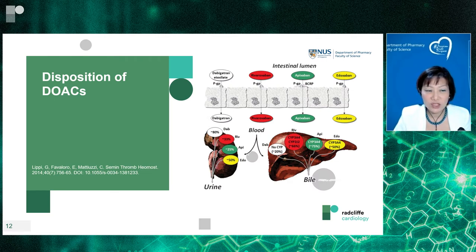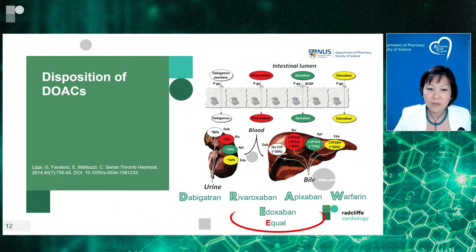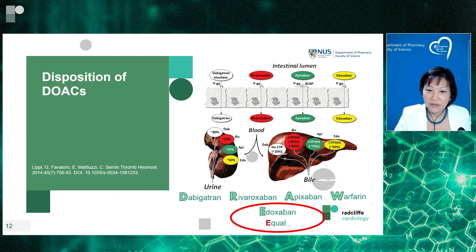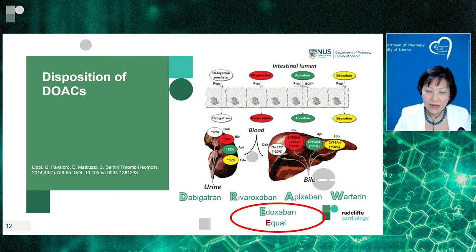Looking at DOAC disposition: dabigatran is heavily cleared by the kidneys, while rivaroxaban, apixaban, and warfarin are more liver-dependent. Edoxaban sits in the middle — about 50% cleared by the kidneys. Interestingly, it's not heavily cleared by the liver; much of it is cleared in bile and feces, so its dependency on CYP3A4 is not as high as the other factor Xa inhibitors.